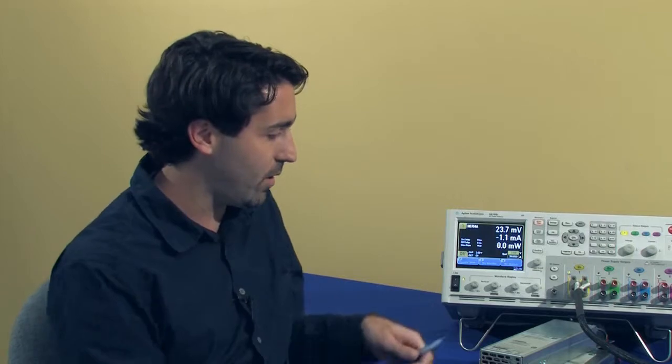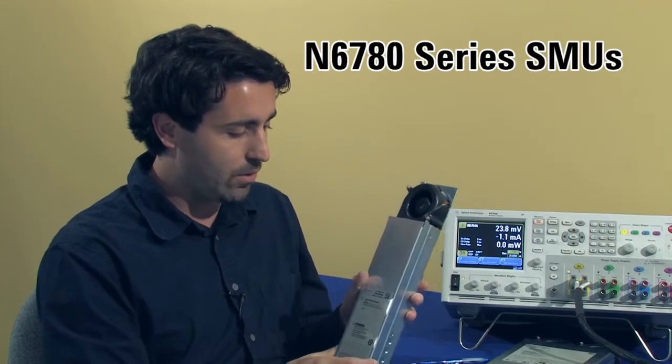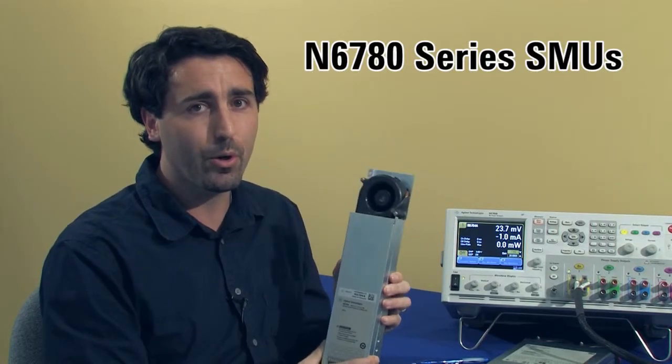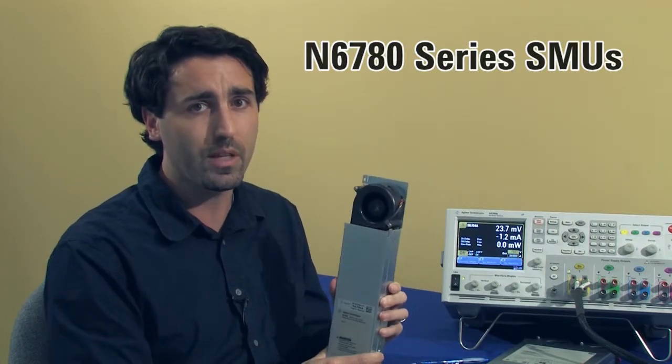We have another video which shows the characteristics or gathering the characteristics of an ultra capacitor. In that video we use one of our N6780 SMU modules. This module has a maximum output current of three amps, so in order to charge the capacitor with this module it would take a little bit longer.